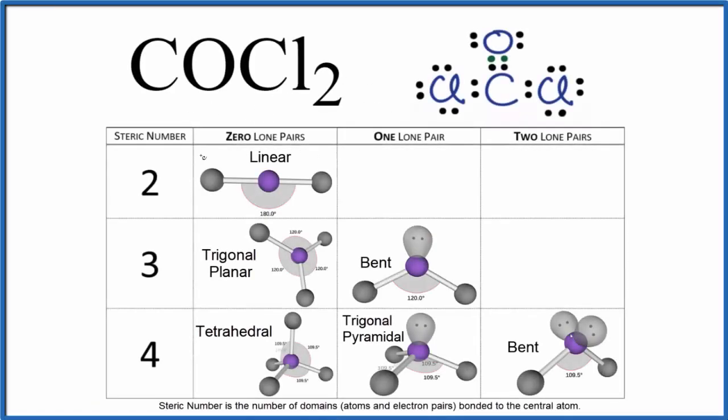Let's take a look at the molecular geometry here for COCl2. Note that this is an oxygen, so we don't have CO cobalt, we have carbon, oxygen, and then the two chlorine atoms, COCl2.